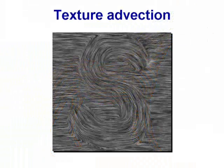We extend our framework to advect texture over a flow field. Using a simple formula, we adaptively trade off temporal coherence and texture regeneration. The key is to advect synthesized coordinates and to exploit multiscale coherent synthesis.